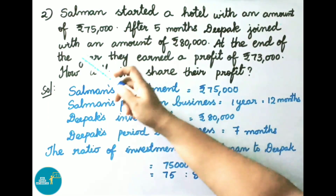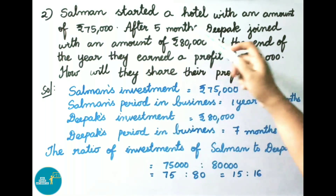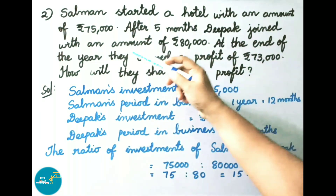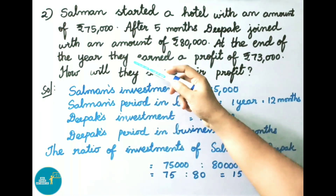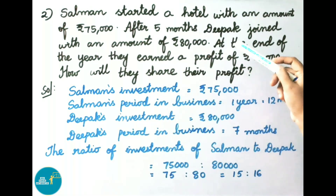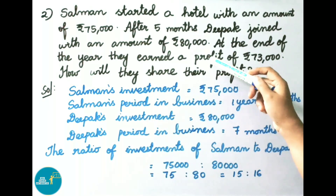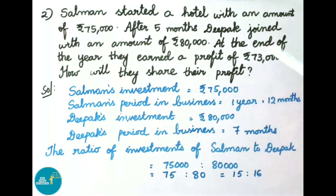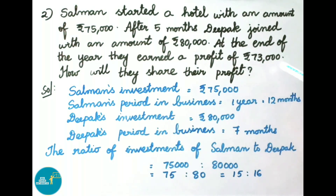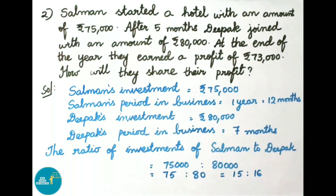Question number 2: Salman started a hotel with an amount of 75,000 rupees. After 5 months, Deepak joined with an amount of 80,000 rupees. At the end of the year they earned a profit of 73,000 rupees. How will they share their profit?